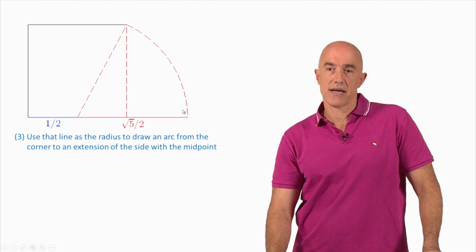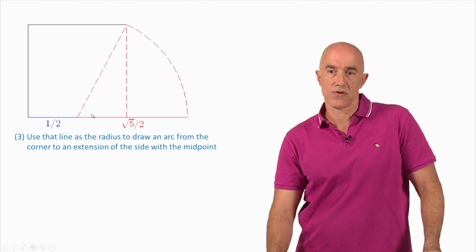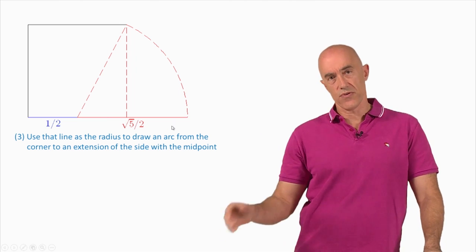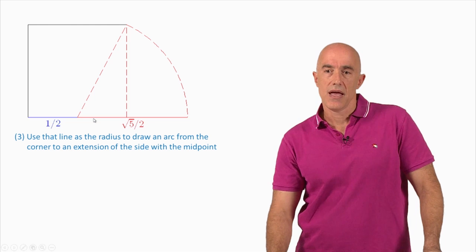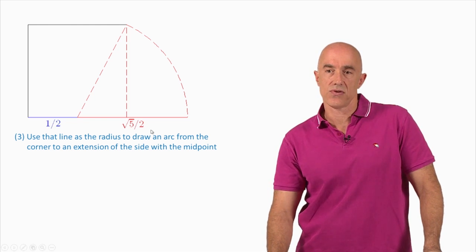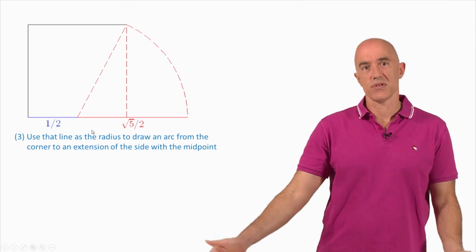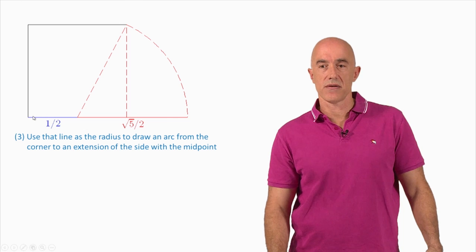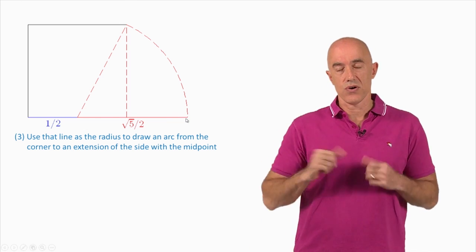And then what do we get? Well, this length here is square root of five over two. And this red line at the bottom here is also square root of five over two because it's the radius. It's the radius. And then this total length one half plus root five over two is one plus root five over two, which is the golden ratio. So now we've drawn a bottom line that has the length of the golden ratio.